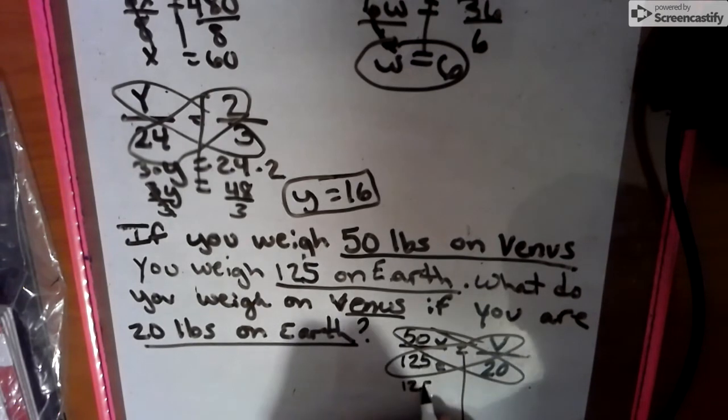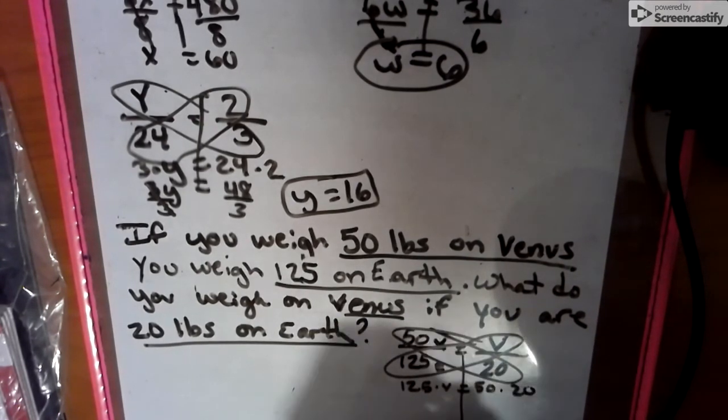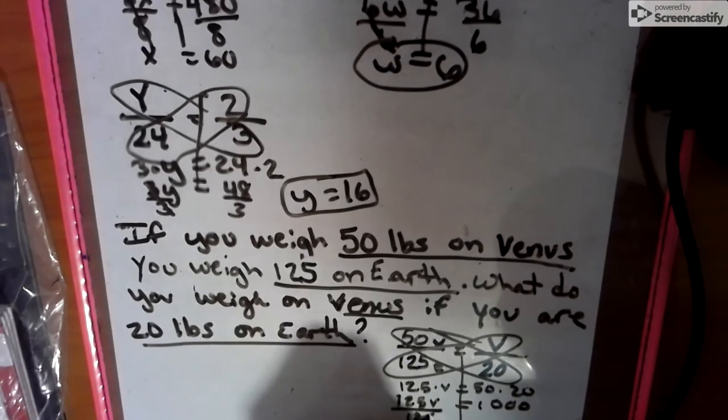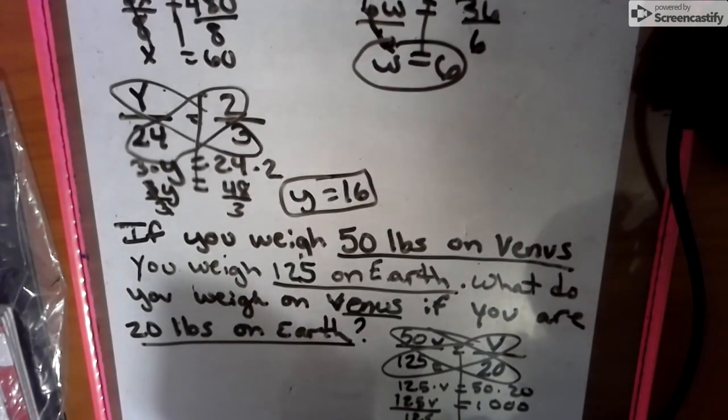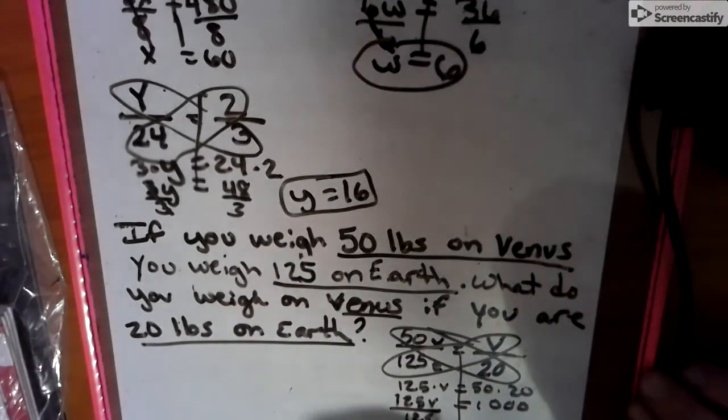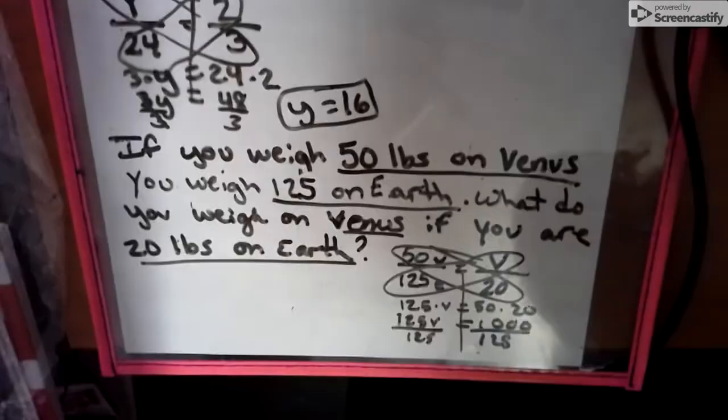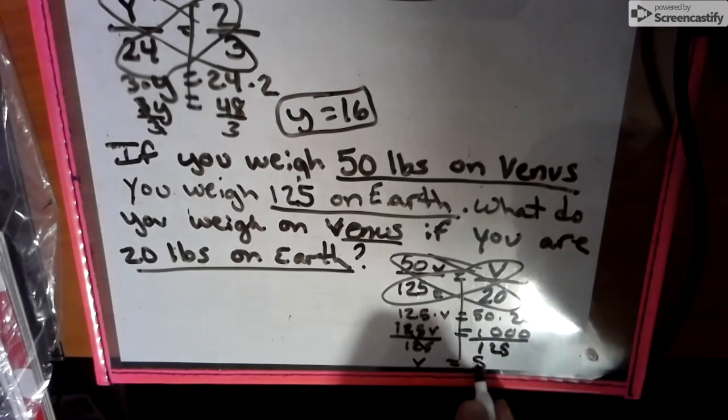So we have 125 times V equals 50 times 20. 1,000 equals 125V. Divide by 125. So then we're going to take 1,000 and divide it by 125. And we are going to get 8.